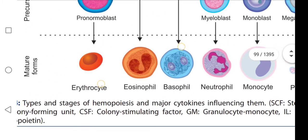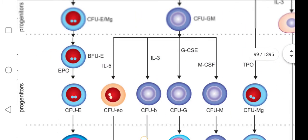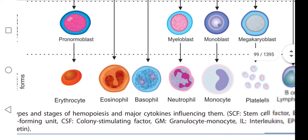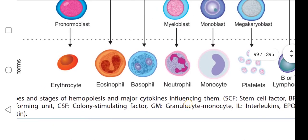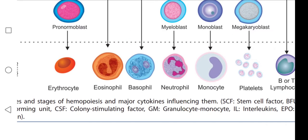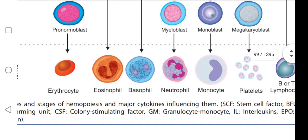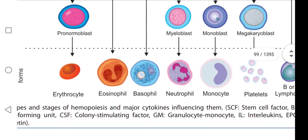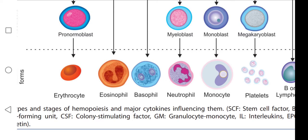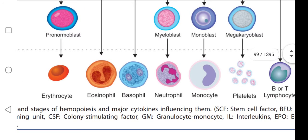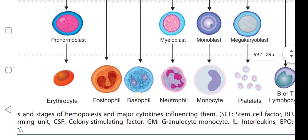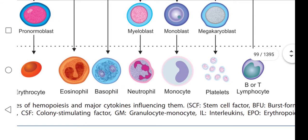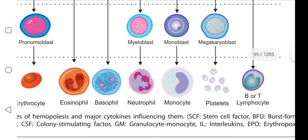Coming to the figure: these are the cells formed — erythrocyte, eosinophils, basophils, and neutrophils. These three are formed from a single one. And monocyte from monoblast. Next, megakaryoblast gives platelets. And the fifth one is lymphoblast, which gives lymphocyte.